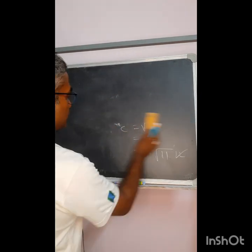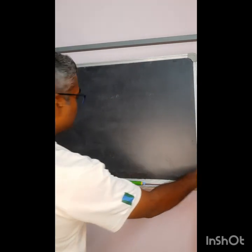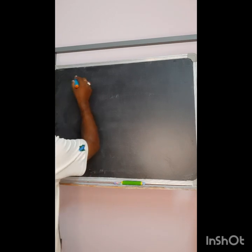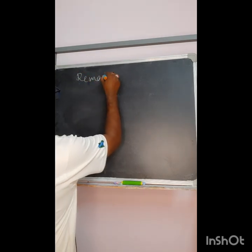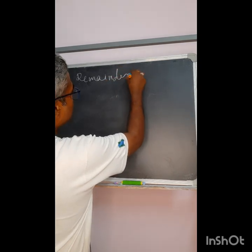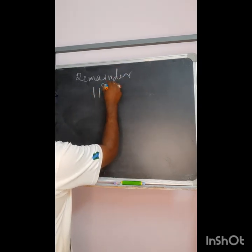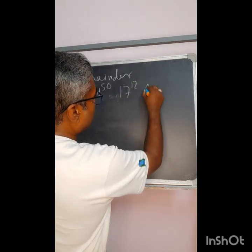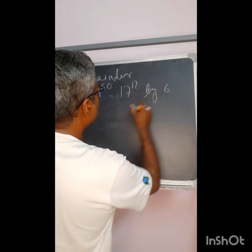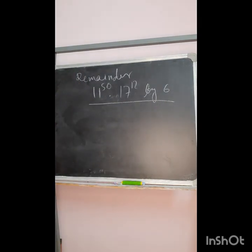So let's come to the next part where I told I will give you some problem to try at home. You have to find the remainder if I divide 11 to the power 50 into 17 to the power 12 by 6. What would be the remainder for this case?